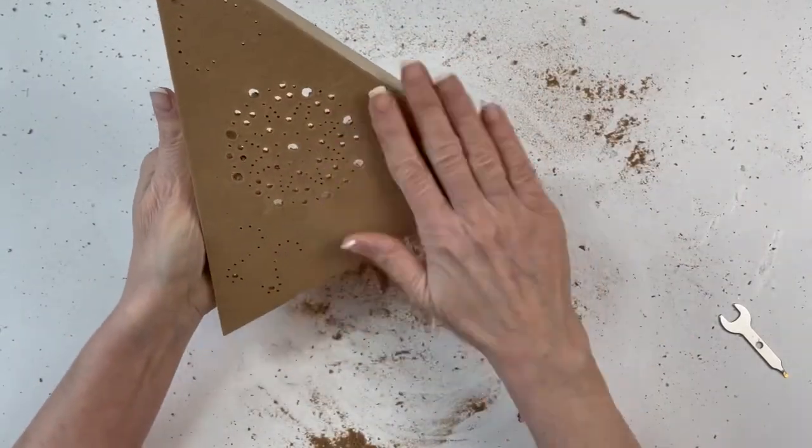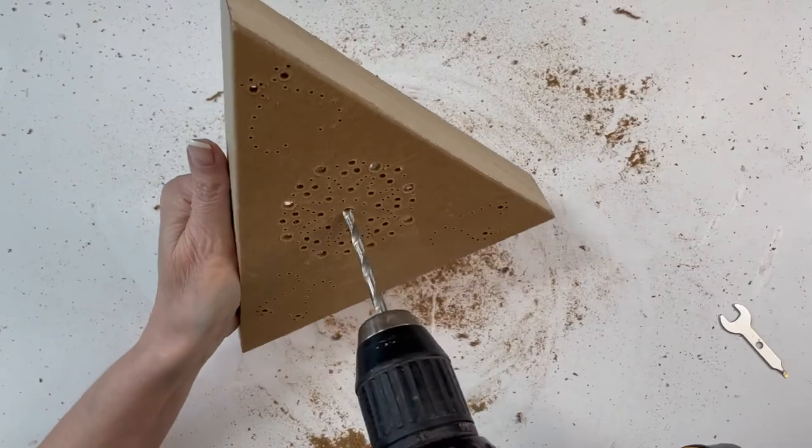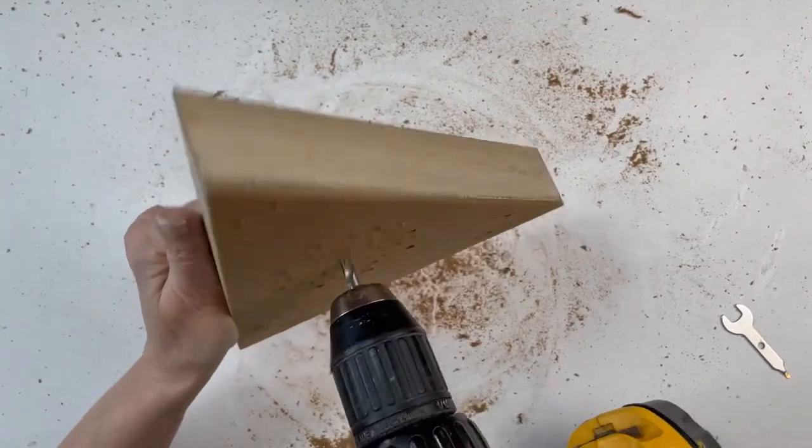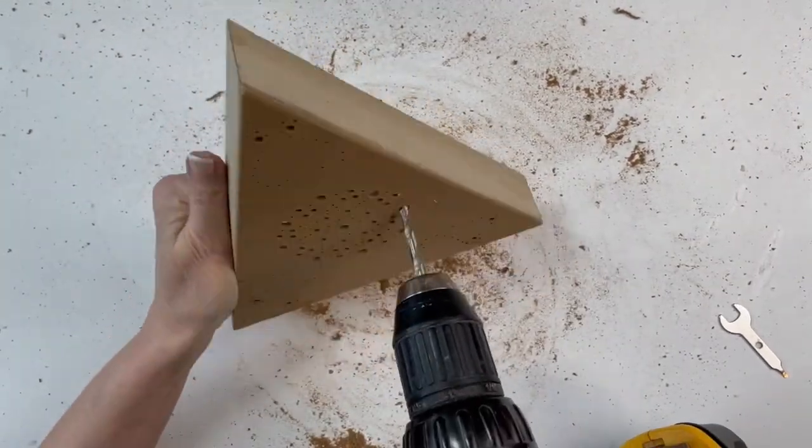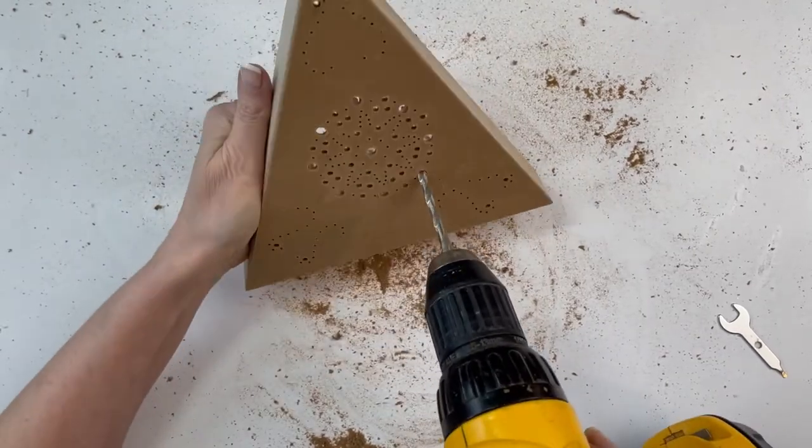The holes will be clogged with sawdust and paper from the other side, so use the drill bit to clear all of the holes. You'll need to do this on both sides.